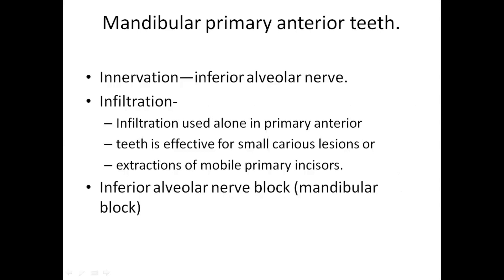For mandibular primary anterior teeth, these are innervated by the inferior alveolar nerve. Infiltration used alone in the primary anterior teeth is effective for small caries and for the extraction of mobile incisors. The inferior alveolar block is used in cases that require bilateral anesthesia. Because some innervation of anterior teeth occurs from the opposite side across the midline, it is advisable to supplement the mandibular block with local infiltration.